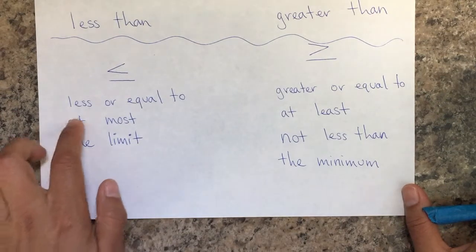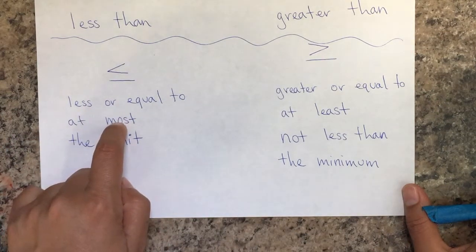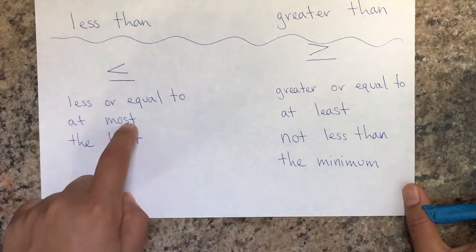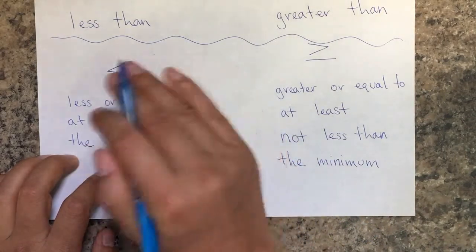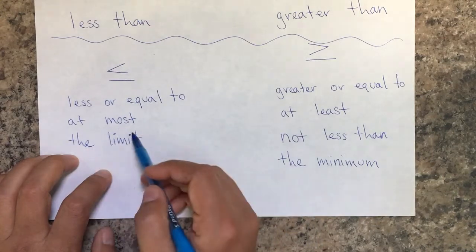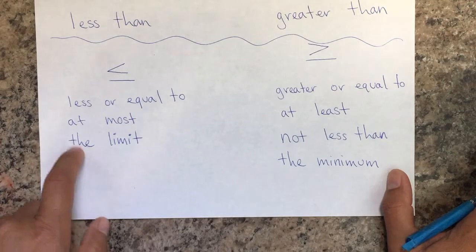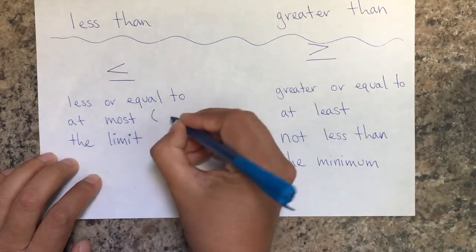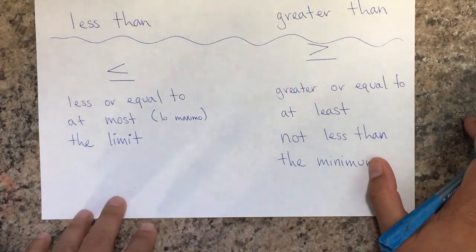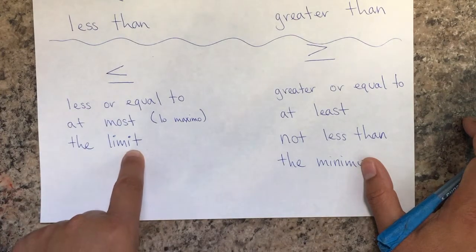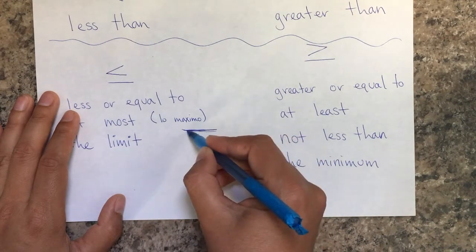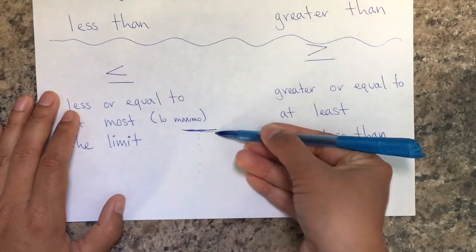Others we may be less familiar with: 'at most.' It sounds like the word 'more' and some people want to use greater than, but no — it's the opposite. In Spanish, it means 'lo más que te puedo dar.' For example, if somebody asks for twenty dollars, the most I can give you is eighteen. It means including that number or less — it's like a limit, the maximum you can have.